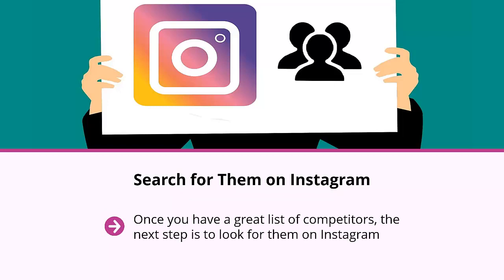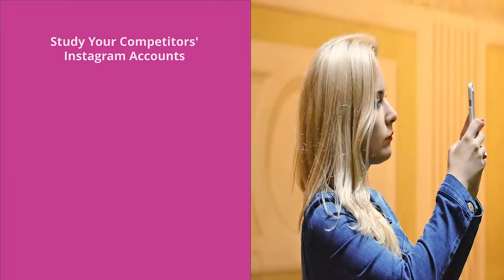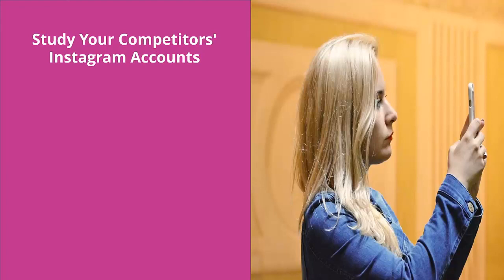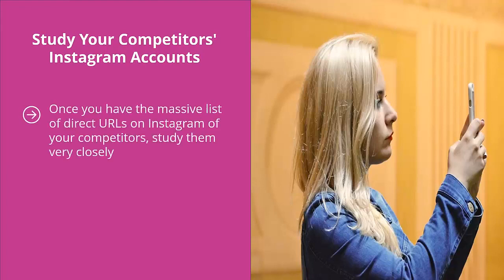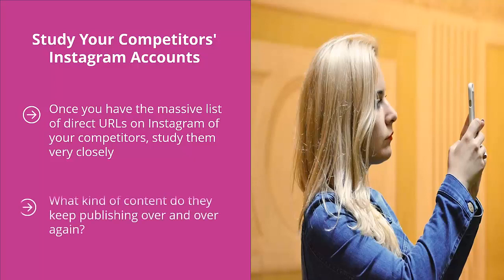Search for your competitors on Instagram. Once you have a great list of competitors, the next step is to look for them on Instagram. Do they have Instagram accounts? If they do, come up with a big list of competitors there as well. Once you have a massive list of direct URLs on Instagram of your competitors, study them very closely. Take note of the quality of their Instagram profile and pay attention to their content strategy — what kind of content do they keep publishing?